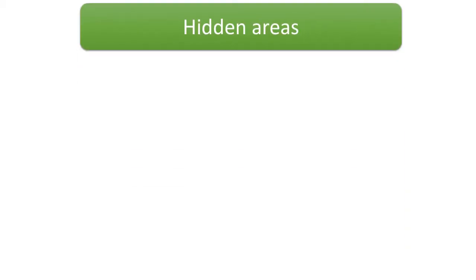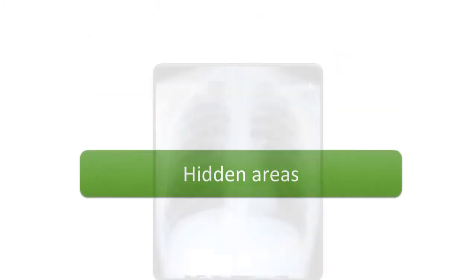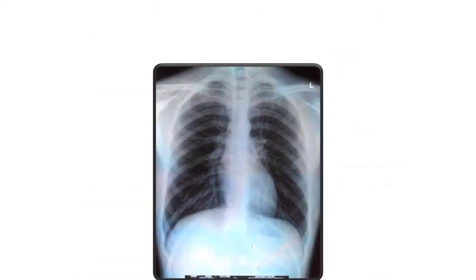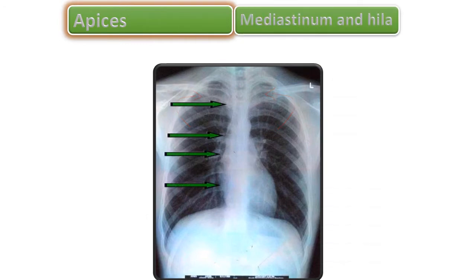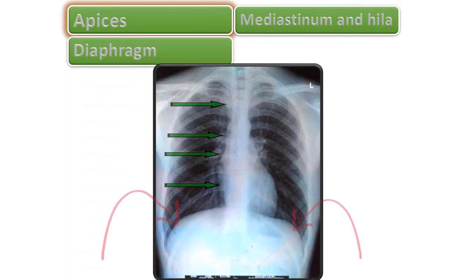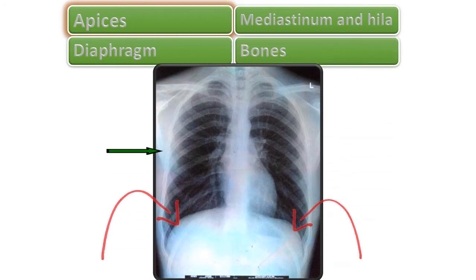This is a diagrammatic image summarizing the hidden areas in a chest X-ray. The hidden areas are: the apices (red arrows), the mediastinum and the hilum (green arrows), the hemidiaphragms on both sides (curved arrows), and the bones.